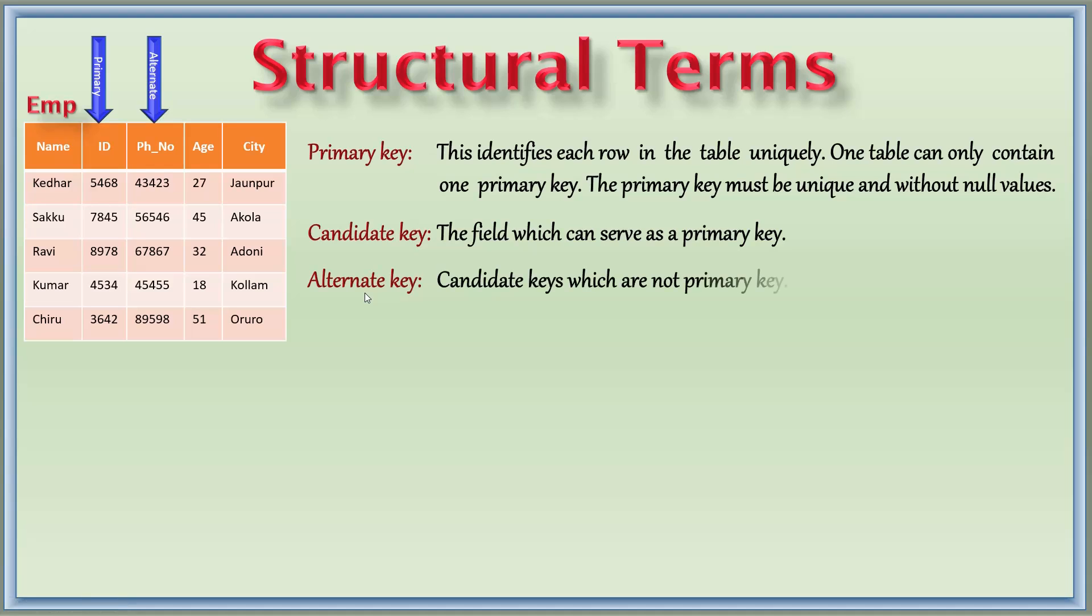And then the phone number which is not the primary key becomes the alternate key now. Candidate keys which are not primary keys are called alternate keys. There may be many alternate keys in a table.